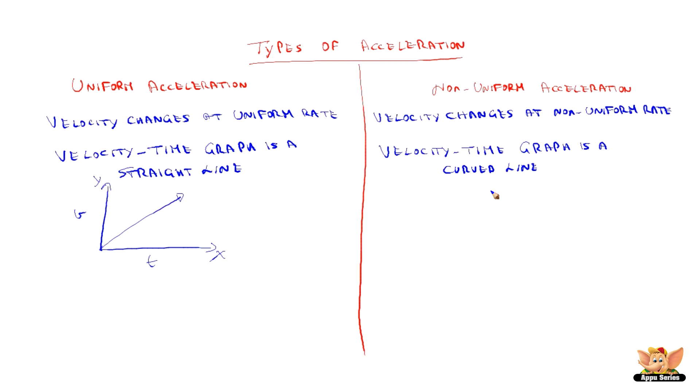When you draw a velocity-time graph for non-uniform acceleration, it is a curved line as the change in velocity is different for equal intervals of time.